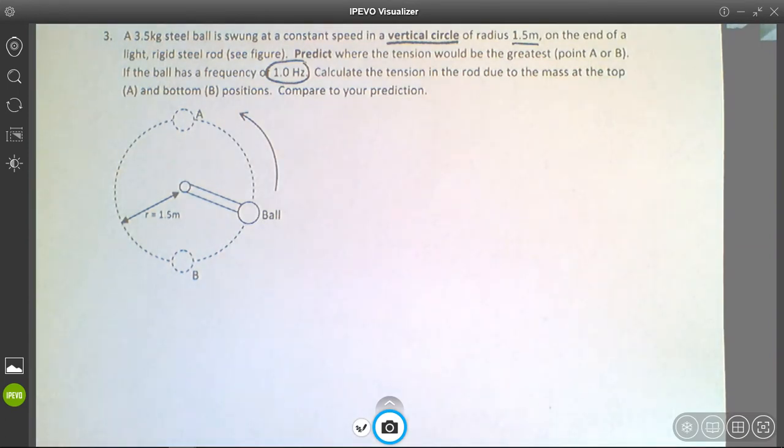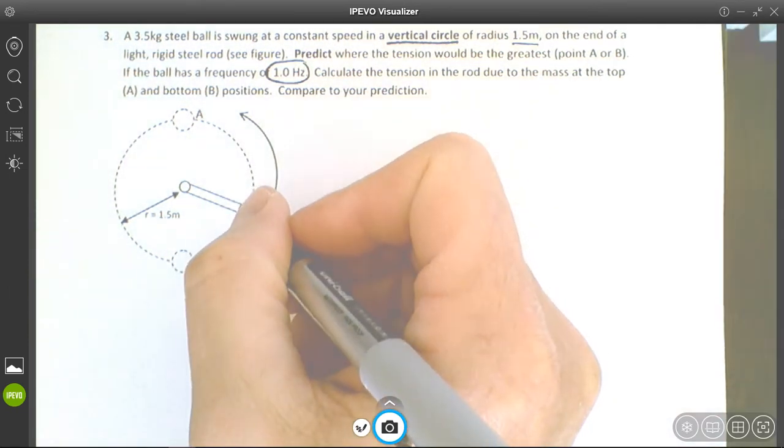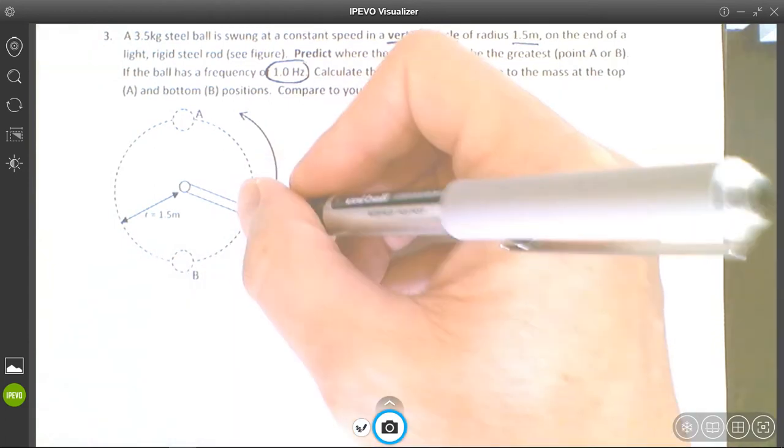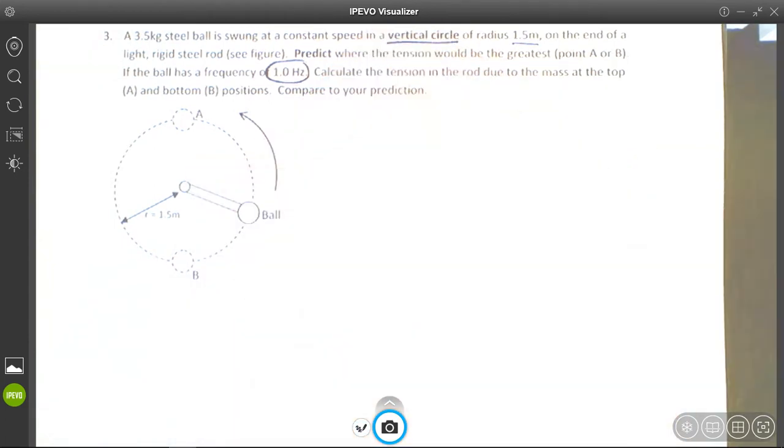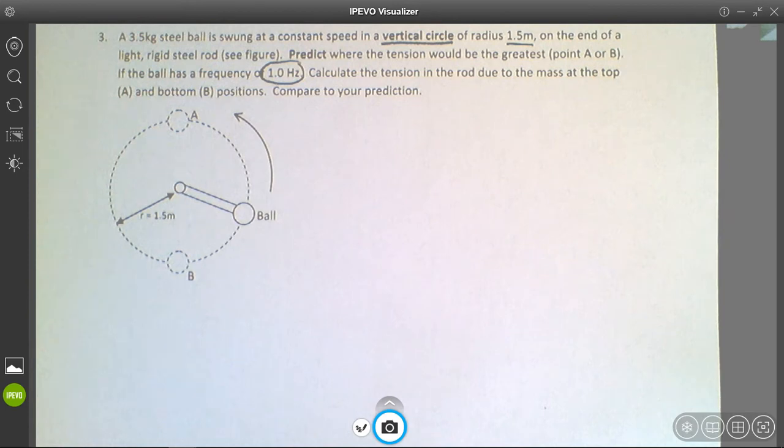We are only going to consider the tension in this rod at the top and the bottom. We're not going to talk about it at this point here because it's quite complicated - there's gravity pulling down and the tension pulling inward, and that actually gets quite complicated to figure out.